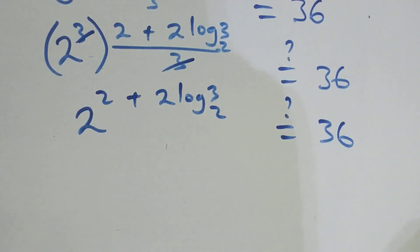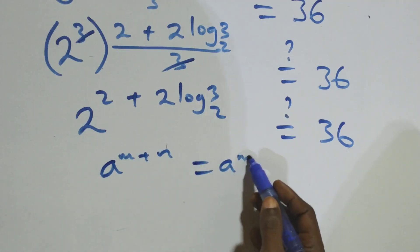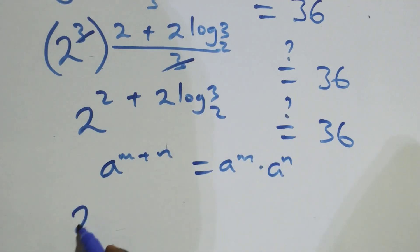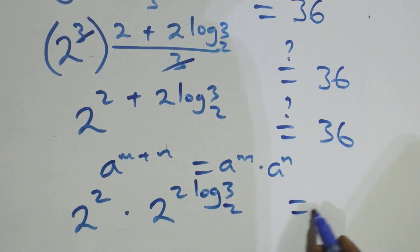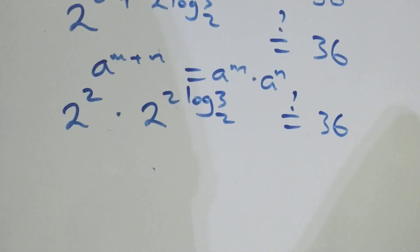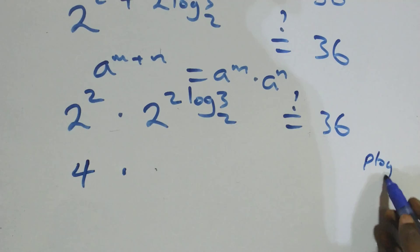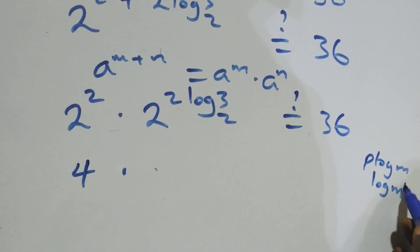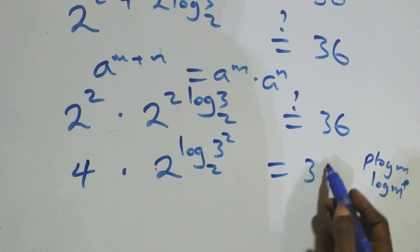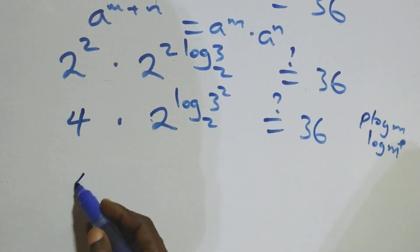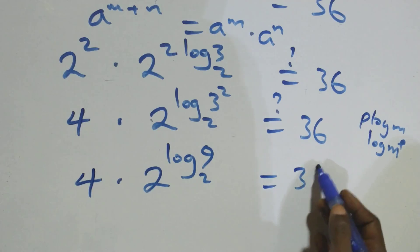Next step, we apply the law of indices: a raised to power (n plus n) is the same as a raised to power n times a raised to power n. So we have 2 squared times 2 raised to power (2 log 3 base 2) equals 36. That is 4 times 2 raised to power log(3 squared) base 2. Now applying the identity a raised to power log b base a equals b, we get 4 times 9 equals 36.